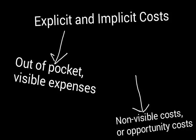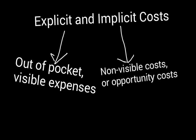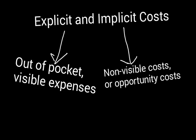Implicit costs, or implicit expenses, are non-visible costs, sometimes also called opportunity costs. These are not out-of-pocket expenses. For example, if you own your own building while running your business, you don't pay rent to anyone. But if you had not run your business, you could have earned income by renting out the building. So there is an implicit, or sacrificed, expense in this case.